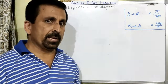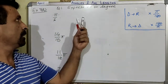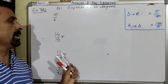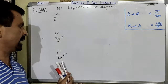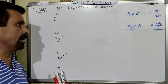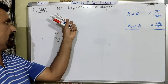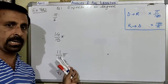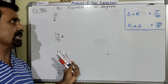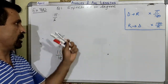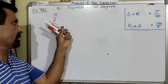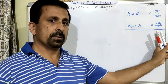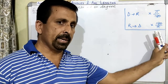This is the first question of Exercise 7.8. The question is: express the given angles in degree. All these angles are in radian — when you see π, that means the angles are in radian and need to be converted into degree. So to convert radian into degree, multiply by 180 over π.